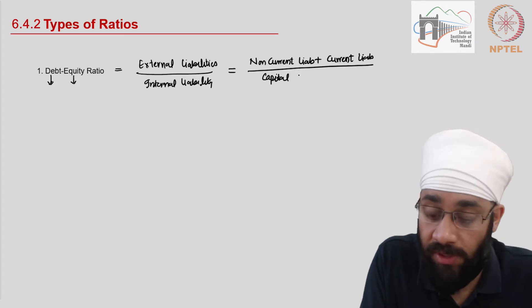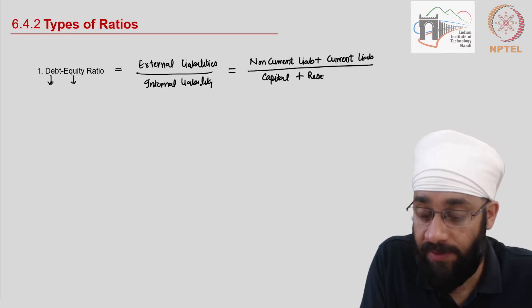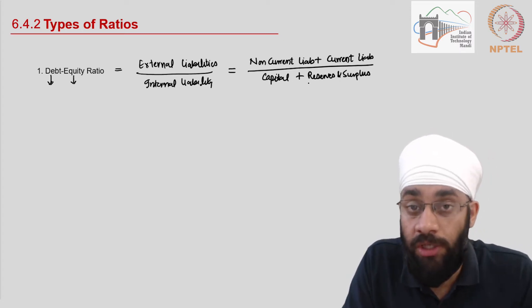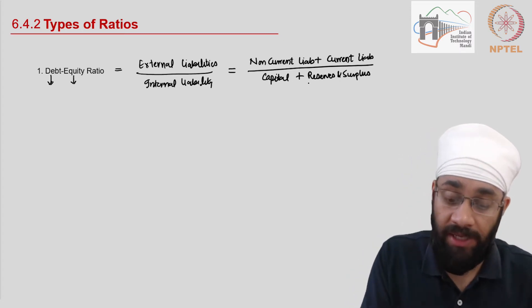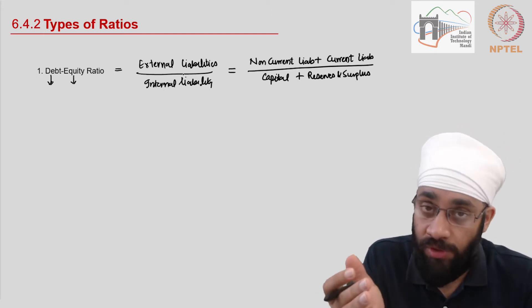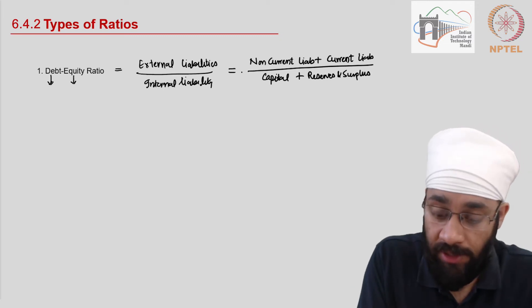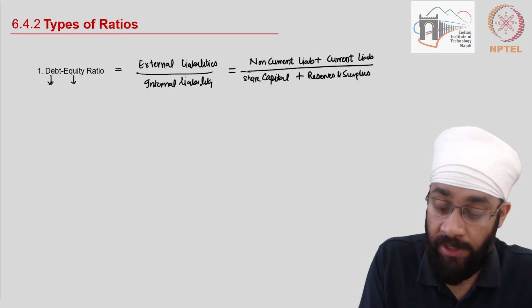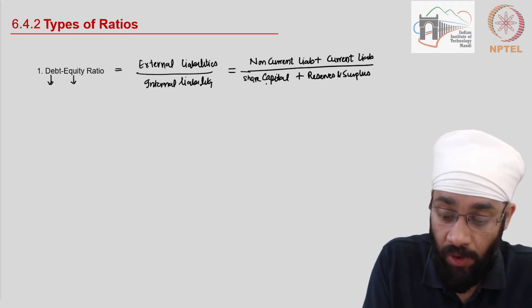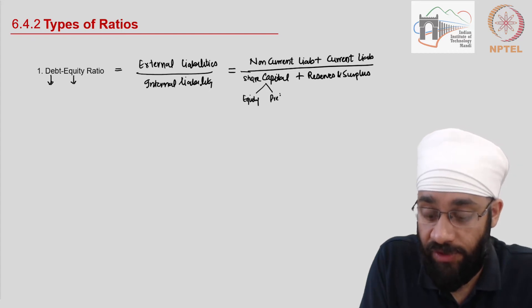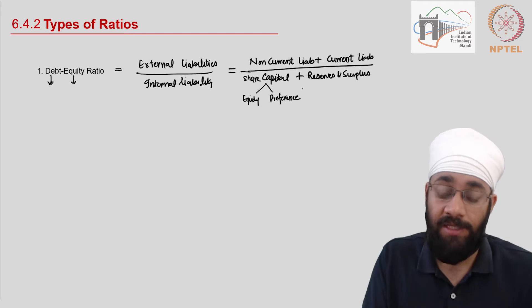We divide by internal liabilities, which are essentially the capital of the shareholders plus any reserves and surpluses. Reserves and surpluses also belong to the shareholders, so internal liabilities are the liabilities of the business towards the owners — the shareholders. Those liabilities include share capital and reserves and surpluses. Share capital can be of two types: equity shares and preference shares.